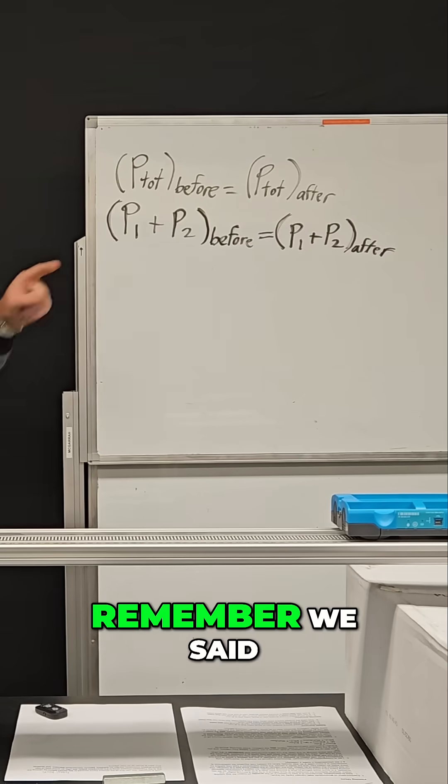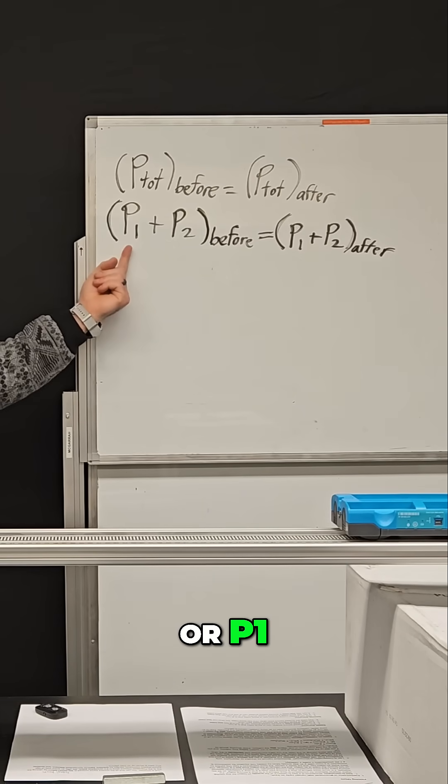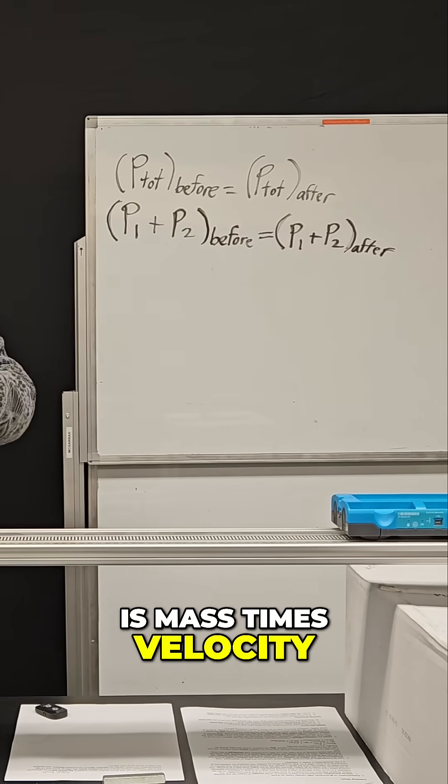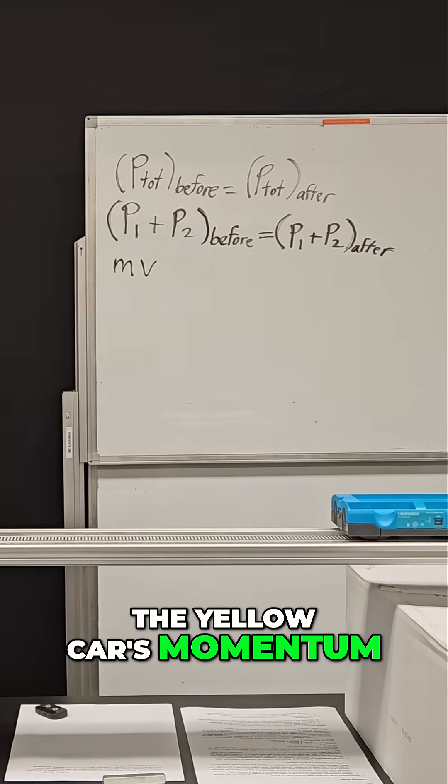Before the crash, object one, remember we said is our yellow car. And we also know that its momentum or P1 is mass times velocity. So I can substitute an M times a V for the yellow car's momentum.